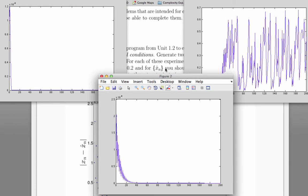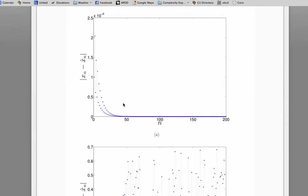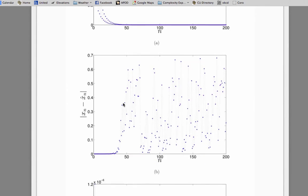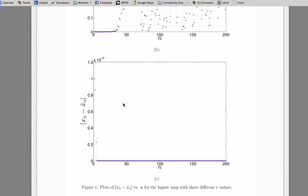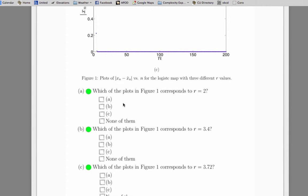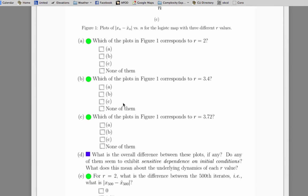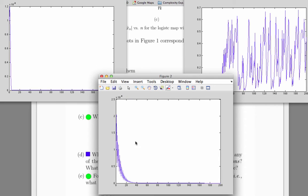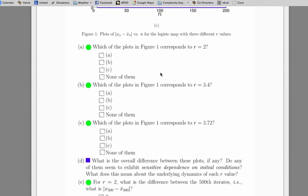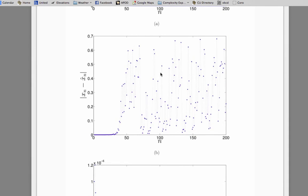The next task was to compare these plots to the ones in the homework handout and then answer the following questions. So which of these plots corresponds to r equals 2? That was the one that fell off like a stone. That was c. Which of the plots in figure 1 corresponds to r equals 3.4? That was the one that oscillated as it was falling, a. And then the third question. Which of the plots in figure 1 corresponds to the plot that we generated with r equals 3.72? That was the chaotic one in b.